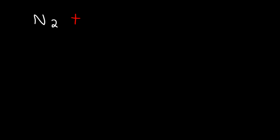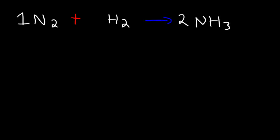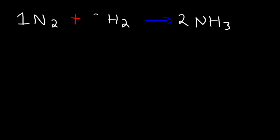Consider this reaction. Nitrogen gas reacts with hydrogen gas to produce ammonia, which is NH₃. Let's balance it. We have two nitrogen atoms on the left side, so we need to put a 2 in front of ammonia. Now we have 6 hydrogens on the right side — 2 times 3 is 6 — so we need to put a 3 in front of H₂.